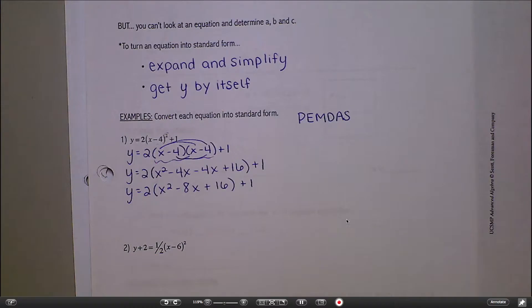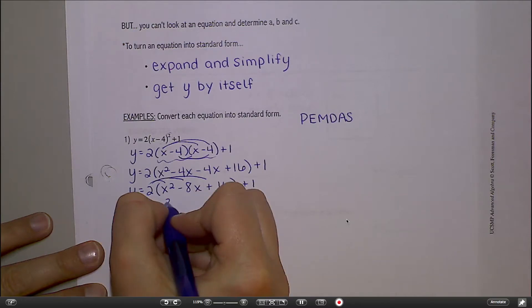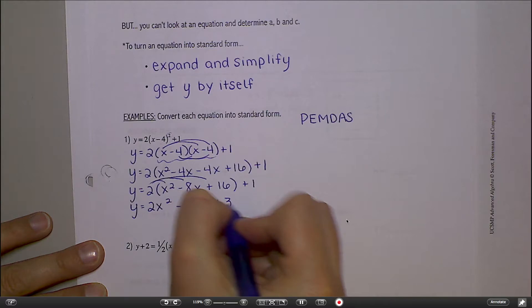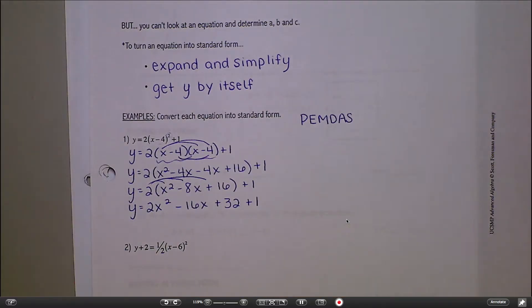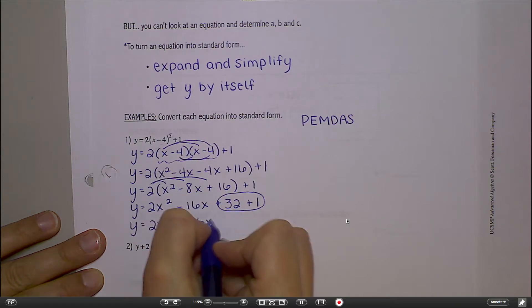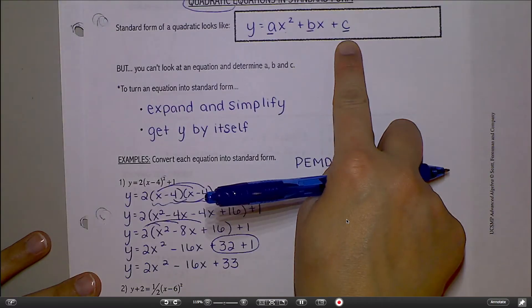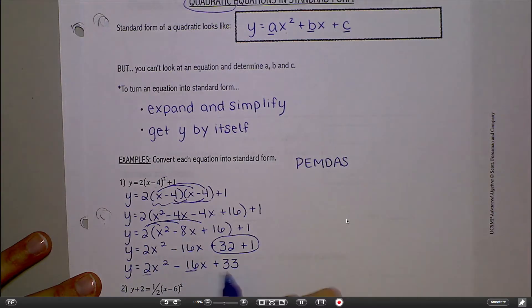Now if I'm following order of operations, what do I do now? Distribute. Good. Distribute the 2. So 2X squared minus 16X plus 32, and then I still have this plus 1 hanging on at the end. Last thing. Y equals 2X squared minus 16X plus 33. Good. Just combine the 32 and the 1. Now, does that look like that? Does it look like our standard form? Here's A, here's B, here's C.